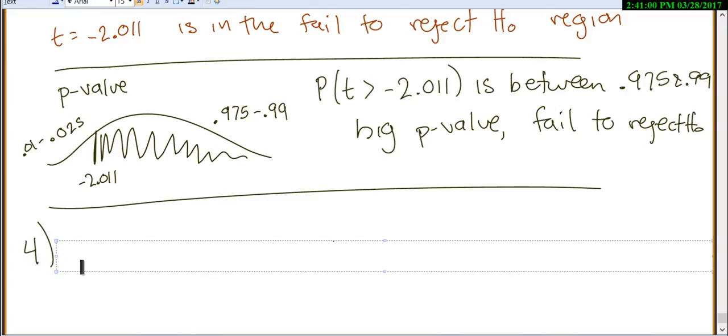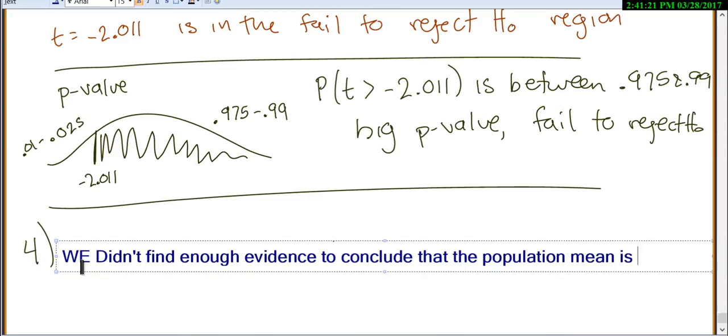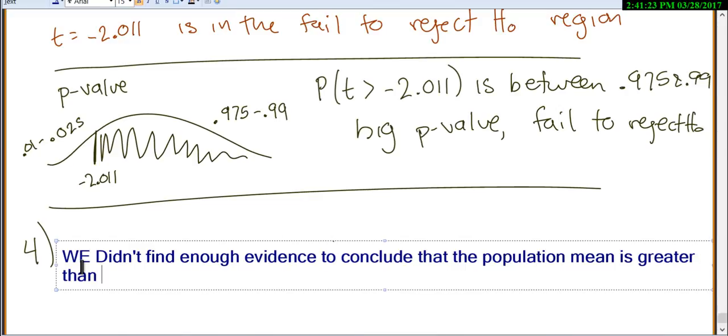So we'd say we didn't find enough evidence to conclude, and really we didn't find like any evidence because that's a huge p-value. We didn't find enough evidence to conclude that the population mean is greater than 6. And when we say we didn't find enough evidence, we really did not find enough evidence. There was like no evidence.